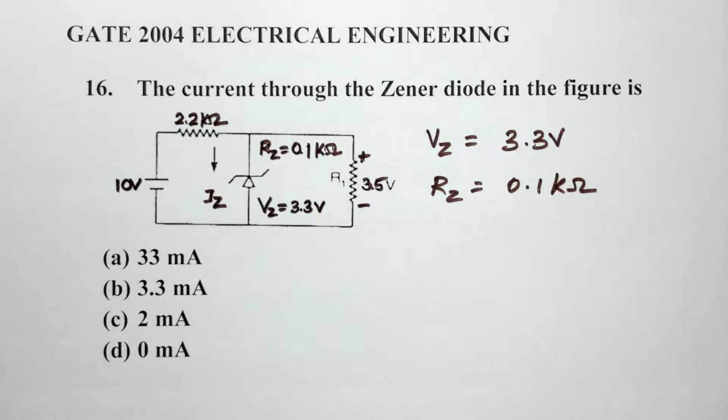Here is the next question, number 16. The current through the Zener diode in the figure given is... We have four options: 33 milliamps, 3.3 milliamps, 2 milliamps, and 0. So in the figure over here you will notice that...